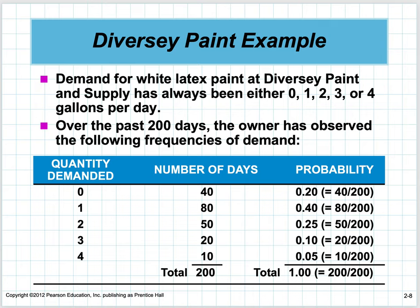Here's a simple example. Demand for white latex paint at this company has always been either 0, 1, 2, 3, or 4 gallons per day. Over the past 200 days, the owner observed the quantity demanded. The number of days they sold 0 was 40; the number of days they sold 1 was 80, and so on, adding up to 200. So 40 over 200 is 0.2 or 20% — the probability of selling 0 cans. Selling 1 can is 80 divided by 200 = 0.4 or 40%. If we add the probabilities up, they come to 1.